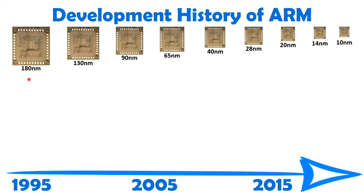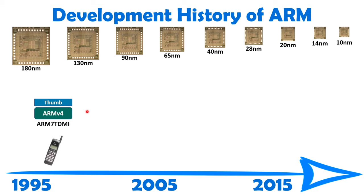They have upgraded their fabrication technology over time. This technology explains the size of fabrication — inside the chip there are transistors, and with respect to technology the size of transistors is getting smaller. When we talk about the initial ARM processor, that was ARM7.